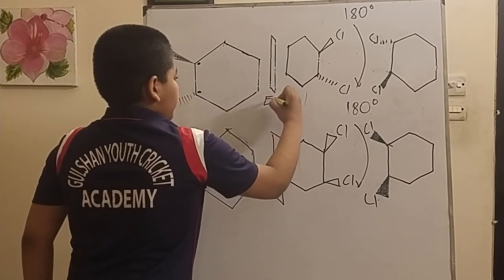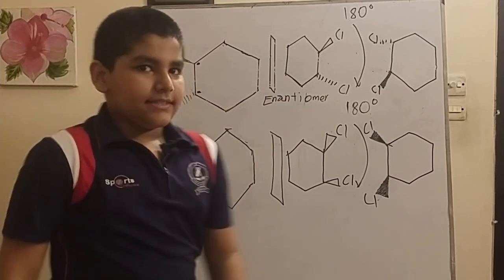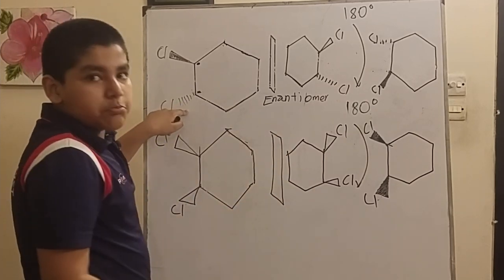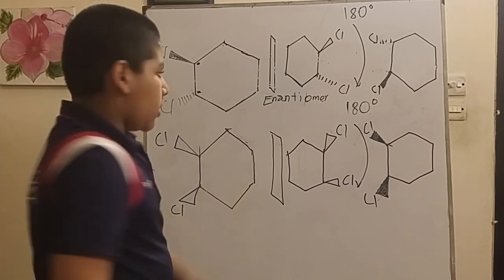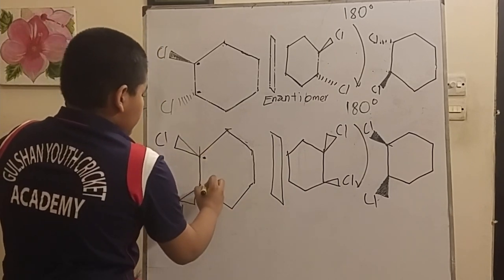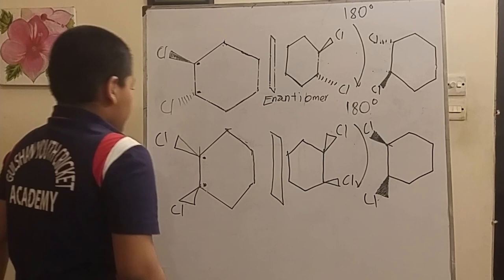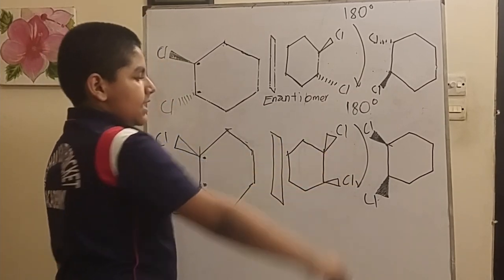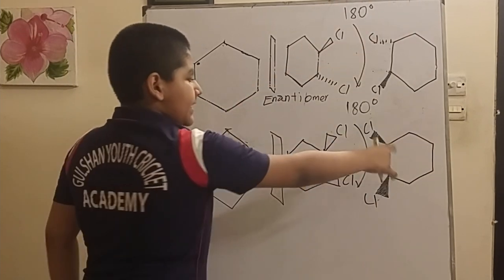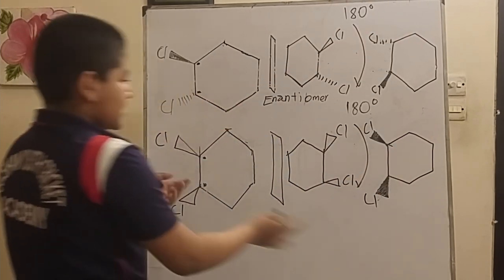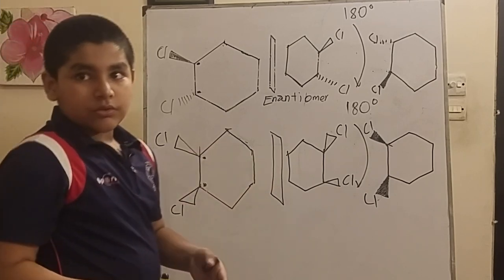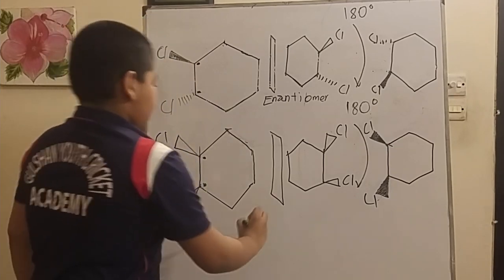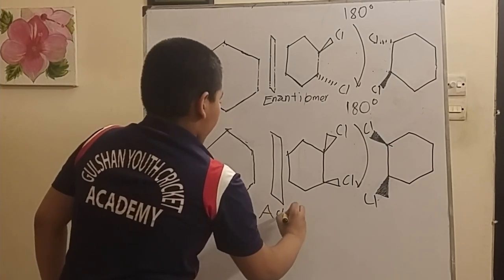But that isn't always the case. In this example, we just changed the dash bond to the wedge bond. These are the two chiral centers. When we take the mirror image and rotate it 180 degrees, we get precisely the same molecule. They will overlap properly, so this is achiral.